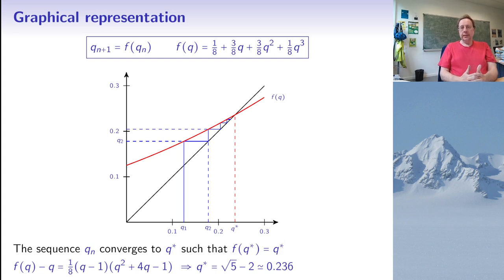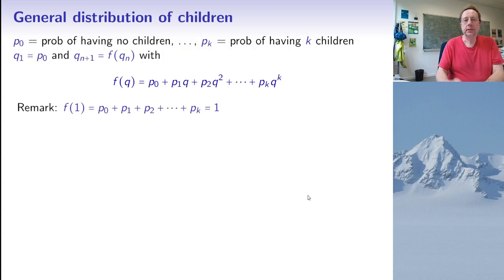Now this was a particular example, but you can easily now see what happens in general. So let me assume that I'm given certain probabilities. So P0 of having no children at all, P1 of having one child, P2 of having two children, up to Pk of having K children, where K is some positive integer. And by exactly the same argument as before, I know that Q1, so the probability that there's no one at generation 1 is equal to P0. And then I know that every Qn plus 1 will be given by F of Qn, where F is now the following polynomial. So it's a polynomial of degree K in Q, and the coefficients are P0, P1, up to Pk.